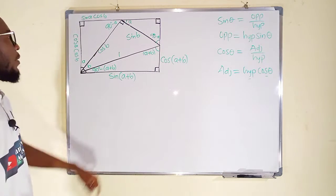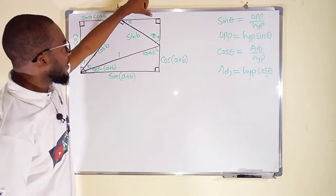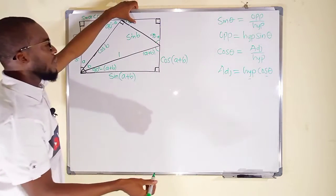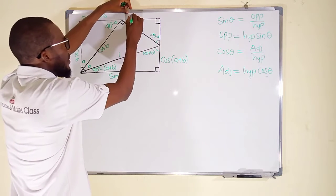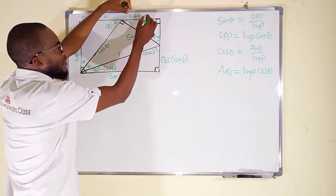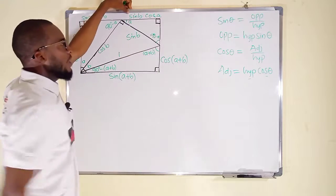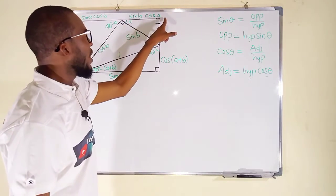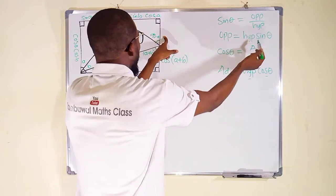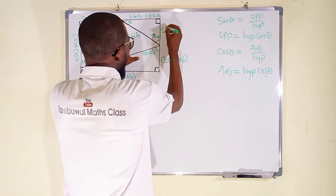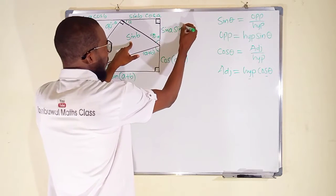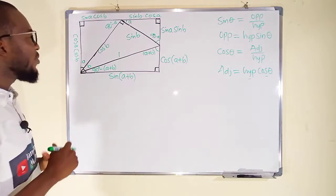Let's find this next side length. This side is adjacent to angle A, and adjacent equals hypotenuse multiplied by cosine of that angle. The hypotenuse here is sin B, so this becomes cos A multiplied by sin B. Finally, the last side is directly opposite to angle A, giving us sin A multiplied by the hypotenuse sin B. Now we have obtained all the required information needed.